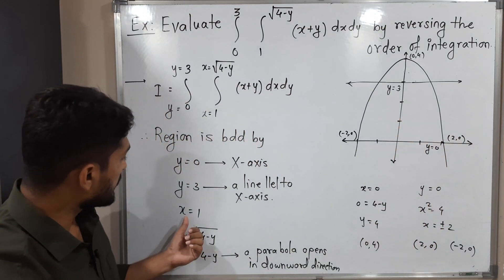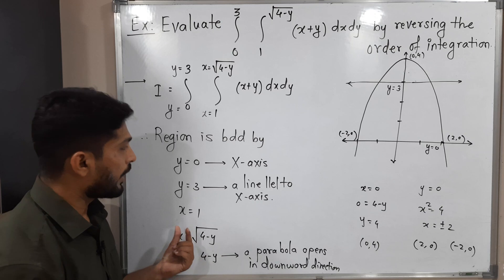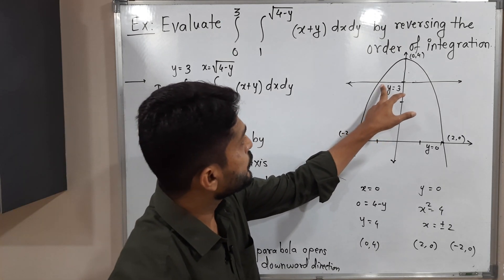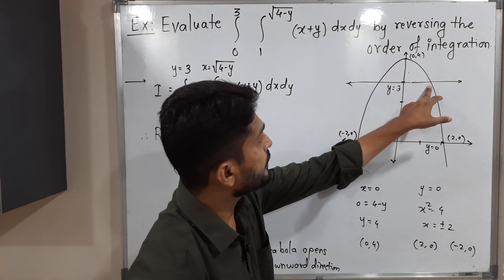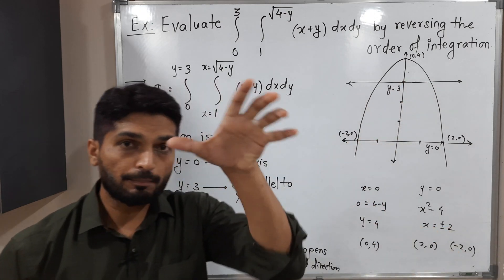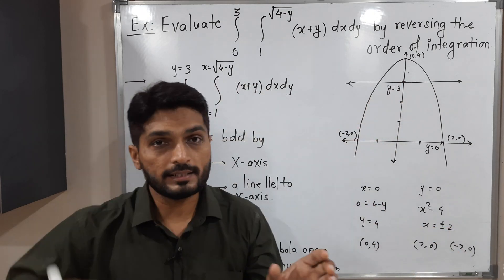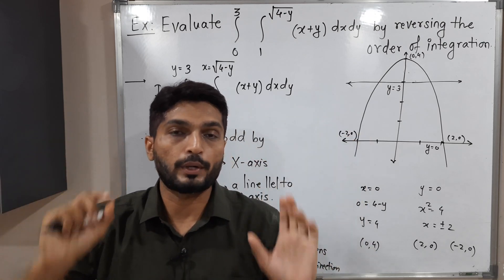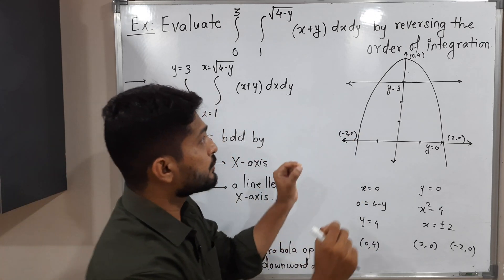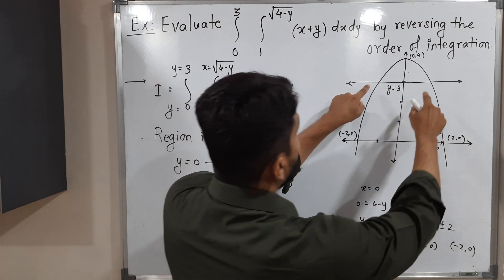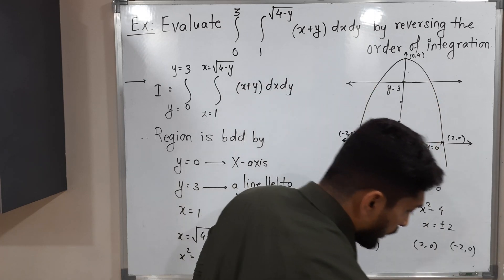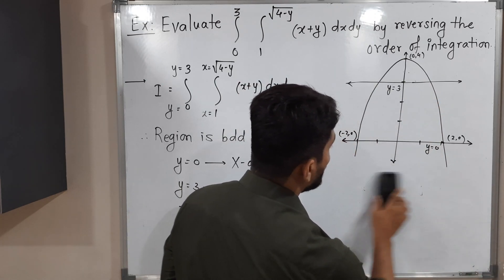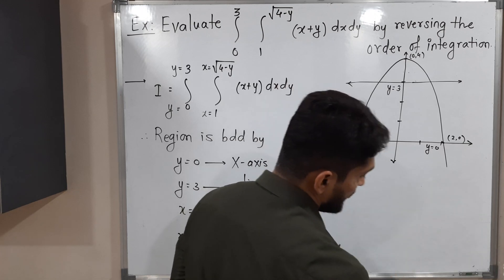One curve remaining is x equals 1. Before drawing it, I want to find the points of intersection. We can see the parabola and the line y equals 3 intersect at two distinct points, so let us find those points.